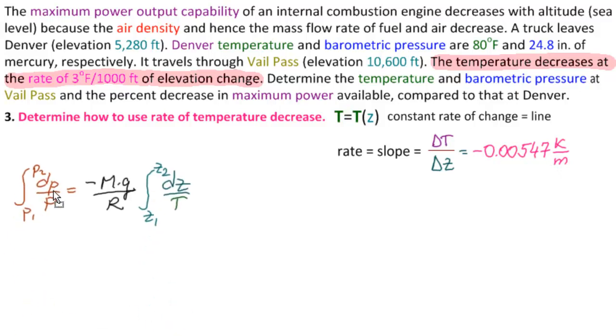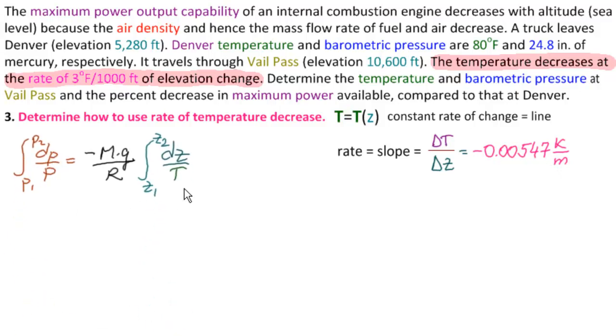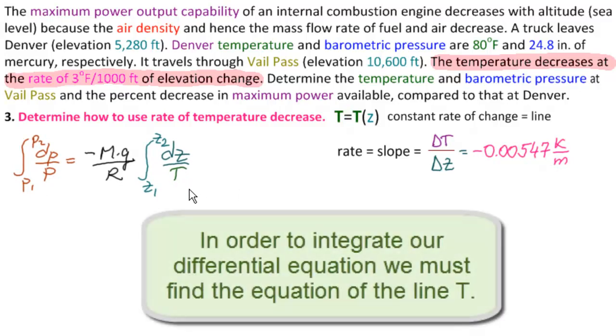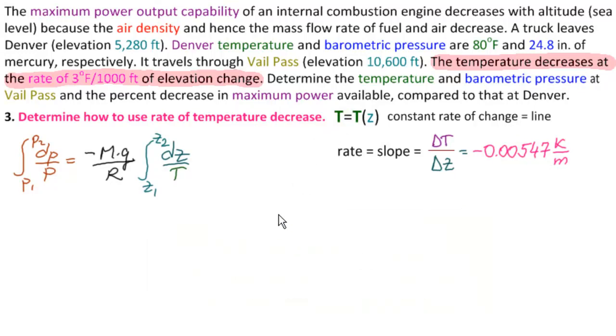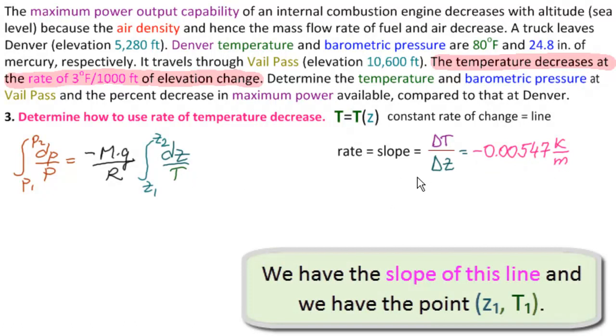Now in part two, remember, we found our differential equation. But in order to integrate we need to change t with a function of z. So what we need to do is find the line. What information do we have? We have several pieces of information. We have the slope of this line, and we have a point on the line. We have the point z1, t1. So z1 is 5,280 feet, otherwise known as 1,609.3 meters. And we have t1, which is the temperature in Denver of 80 degrees Fahrenheit, which we found to be 299.8 Kelvin.